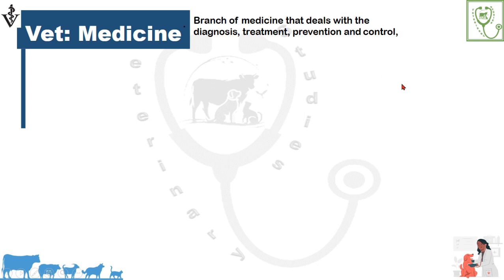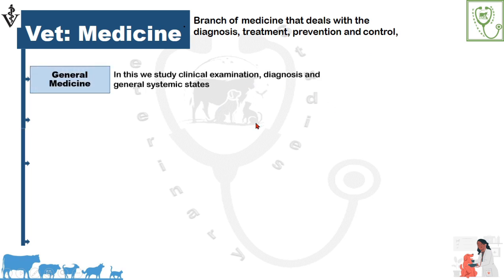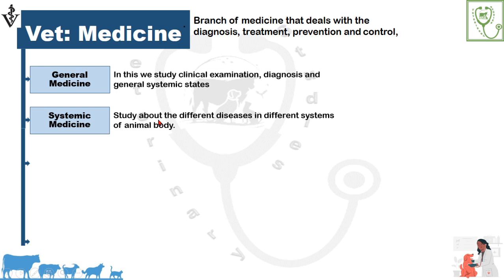Veterinary medicine is the branch of medicine that deals with the diagnosis, treatment, control, and prevention of diseases in animals. It includes general medicine, in which we study about clinical examination, diagnosis, and general systemic states. General systemic states include toxemia, septicemia, bacteremia, hyperthermia, hypothermia, etc. Systemic medicine is the study of diseases which affect particular systems of the animal body.